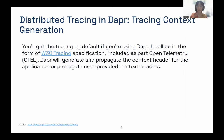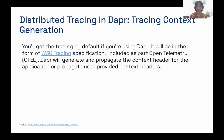We already know how distributed tracing in Dapr works — it uses the Dapr runtime on each sidecar container attached to each service. How is tracing actually generated by Dapr? If you are using Dapr, you get these features by default, meaning Dapr will generate the trace for you. It will be in the form of W3C tracing specifications, which is included as part of OpenTelemetry (OTel). Dapr will generate and propagate the context header for the applications.